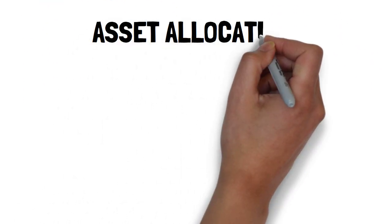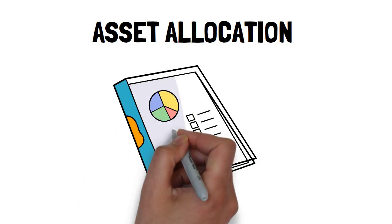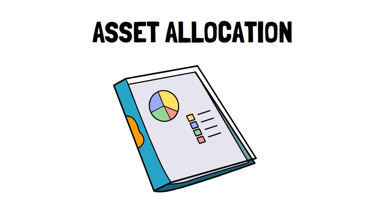Asset allocation is the cornerstone to successful investing. This will be the most important portfolio decision you make. Asset allocation is the process of dividing our investments into different kinds of asset classes to minimize our risk and maximize our return.